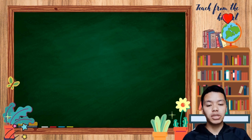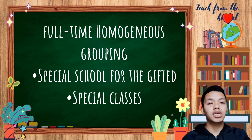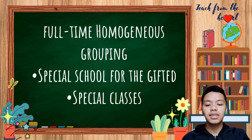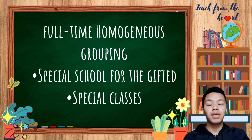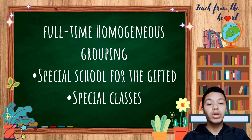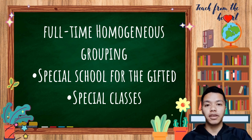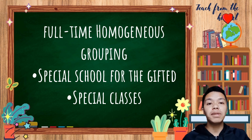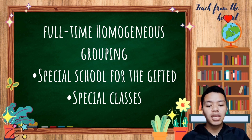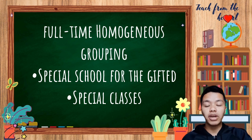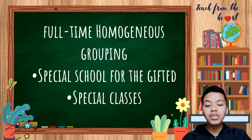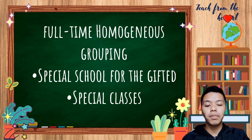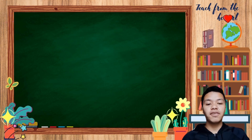In full-time homogeneous grouping, we have special schools for the gifted. These offer a curriculum based on DepEd guidelines, enriched in academic, scientific, artistic, and other areas of development. An example is the Philippine High School for the Arts, which combines a general secondary program with a special arts curriculum. There are also special classes — a school-within-a-school program at the elementary level covering grade-level objectives with enrichment, personal development, and advanced classes. The Head Start program addresses the educational, aesthetic, and social needs of preschoolers who show superior abilities above their age level.